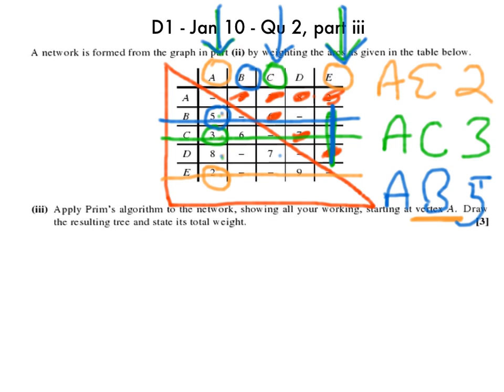So I scan all the circled rows, so that's A, and that's B, and that's C, and that's E, and I'm looking for things that aren't crossed out, and there's not much left here. There's literally an 8 there, and a 7 there, so I circle the least, cross out, and circle there, and I'm done. So I know that C to D is 7.